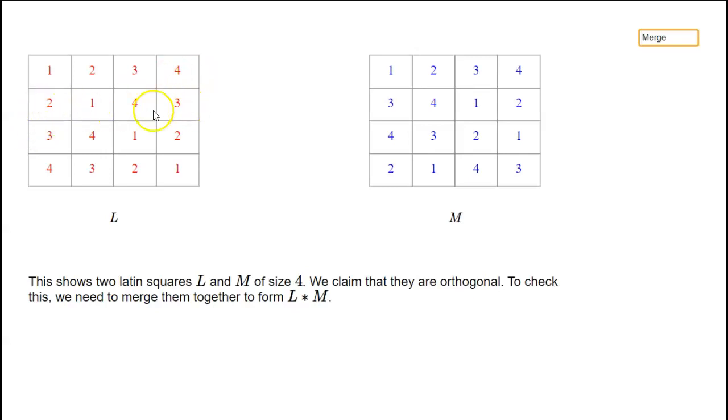You have 1, 2, 3, 4; 2, 1, 4, 3; 3, 4, 1, 2; 4, 3, 2, 1. So there's no repeats in any row.